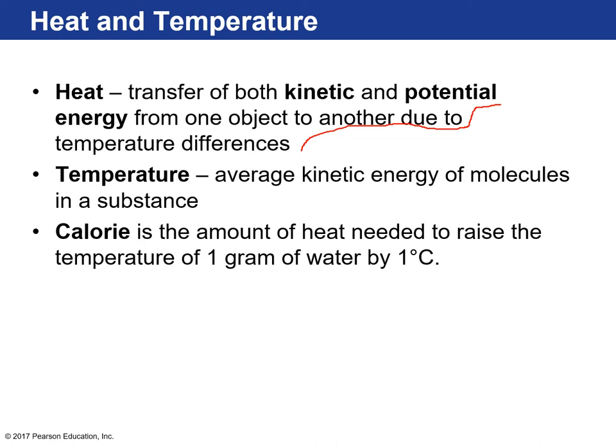To understand the difference between heat and temperature: say you fill a bathtub with really hot water and you also have a candle with a flame. If you measure the temperature of the candle flame versus the bathtub water, the flame temperature will be much higher — the average kinetic energy of combustion molecules is higher than that of the bath water. However, the bathtub holds more heat energy because there's more water and a bigger volume — so even though the flame is hotter in temperature, there's more heat stored in the bathtub.